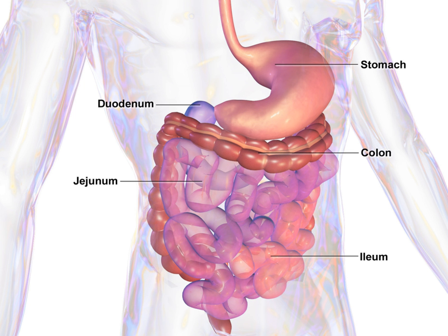The suspensory muscle attaches the superior border of the ascending duodenum to the diaphragm. It is an important anatomical landmark showing the formal division between the duodenum and the jejunum, the first and second parts of the small intestine respectively. This is a thin muscle derived from the embryonic mesoderm.